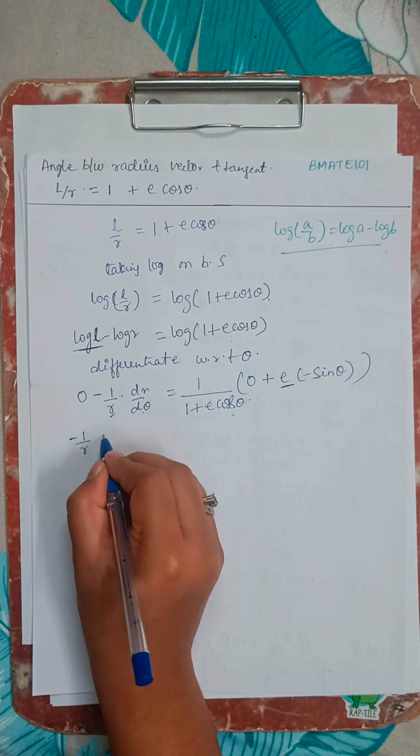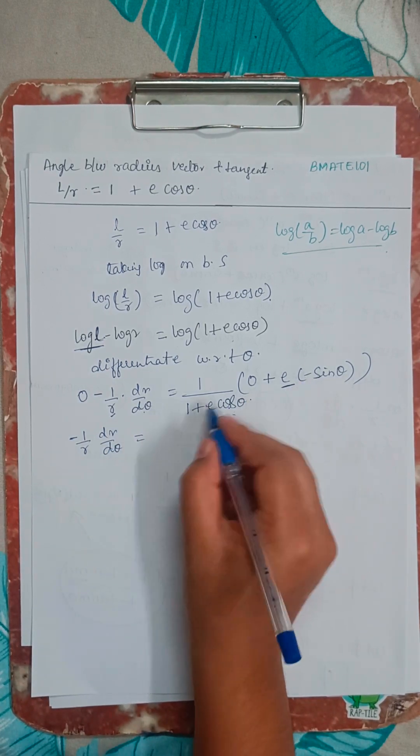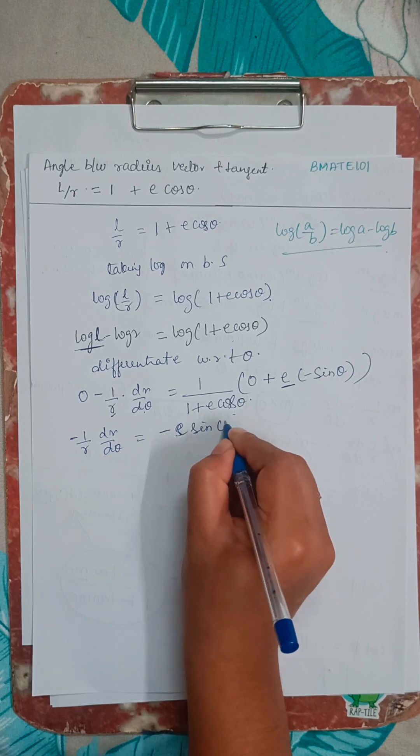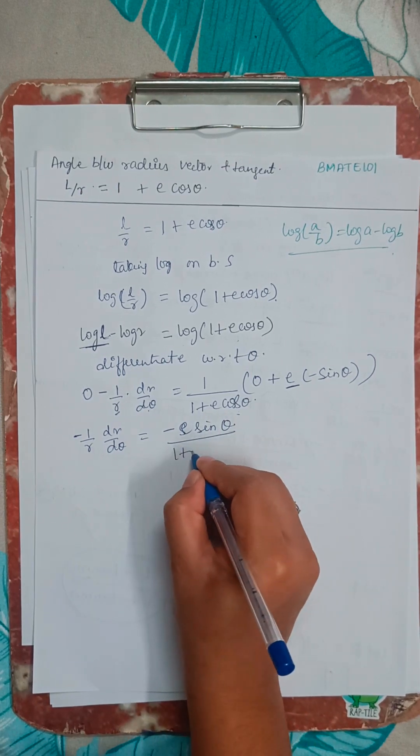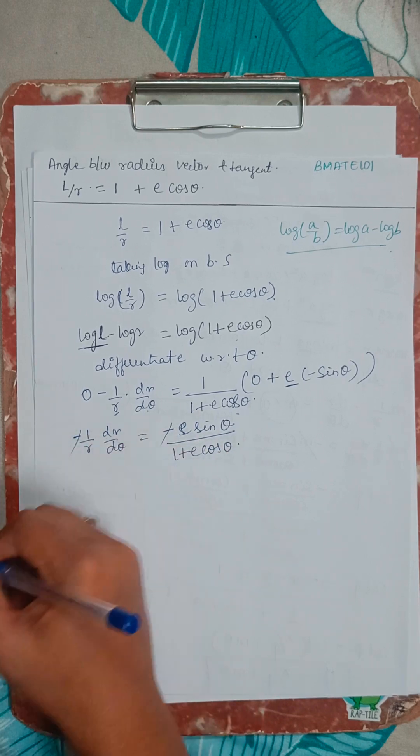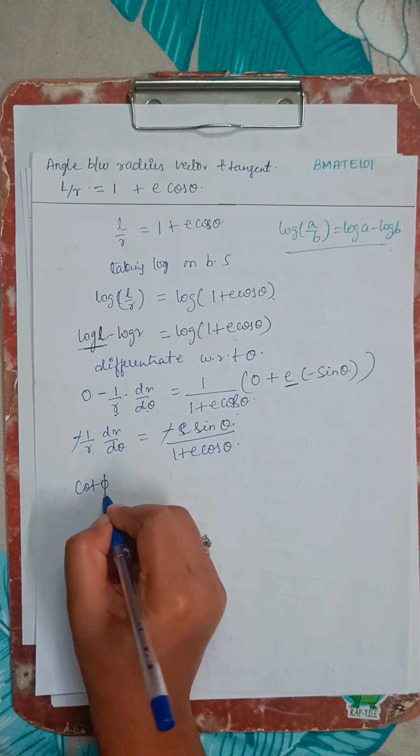So minus 1 by R dr by d theta I have here, and minus E sin theta divided by 1 plus E cos theta. So this minus and minus will get cancelled. Now this is cot phi. Right?